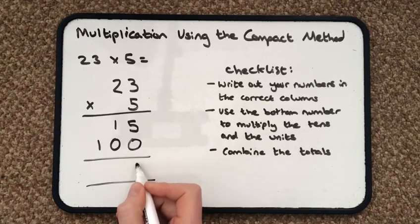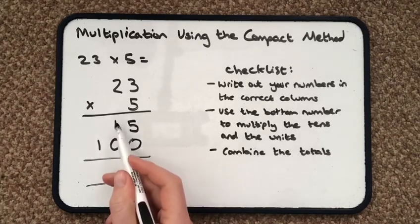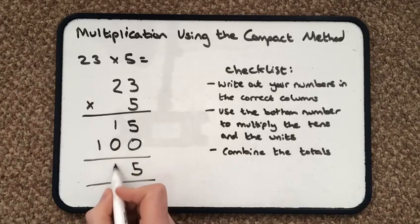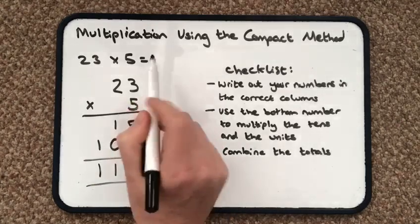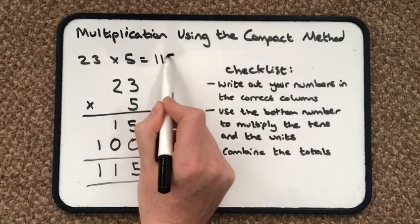5 add nothing is 5. 1 ten add no tens is 1. And 100 add no other 100s is 115. And that would be my answer.